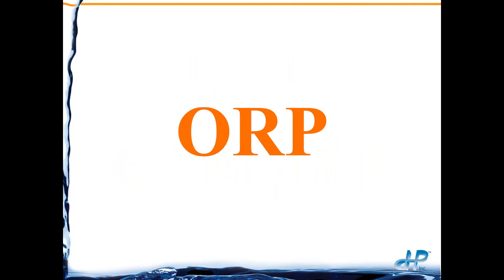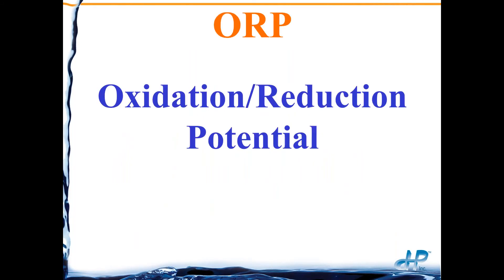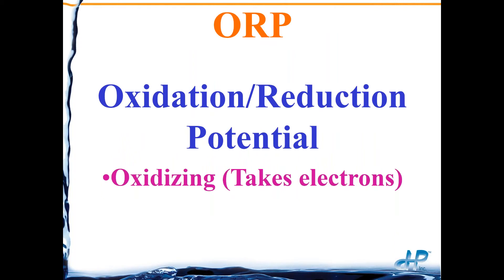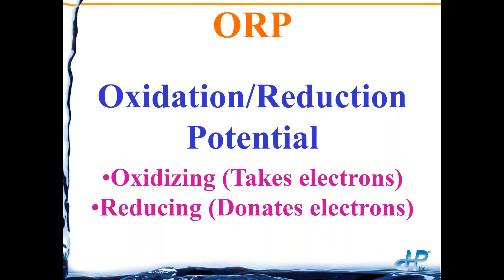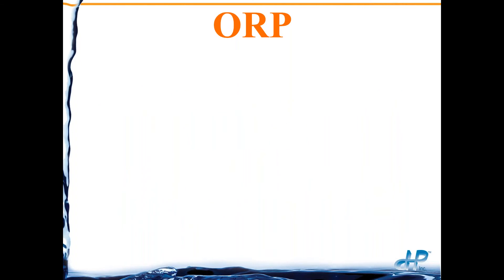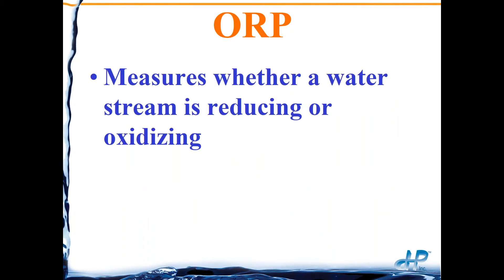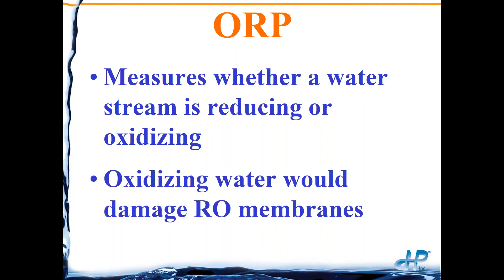ORP stands for oxidation reduction potential. We're talking about oxidation or oxidizing, where we're taking electrons, and the opposite — reduction or reducing — where we're donating electrons. An ORP measurement will tell us whether a water stream is oxidizing, meaning it wants to take electrons, or reducing, meaning it wants to give up electrons.